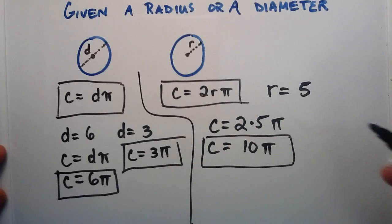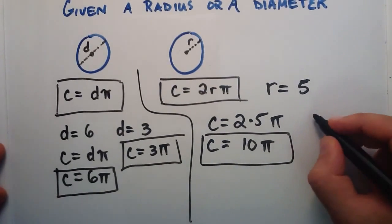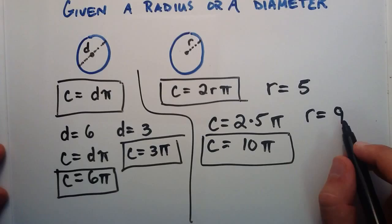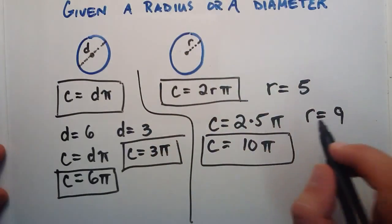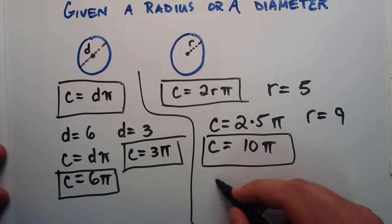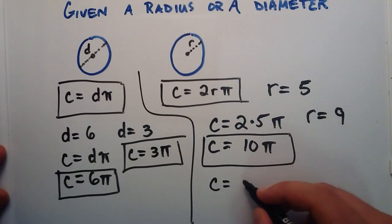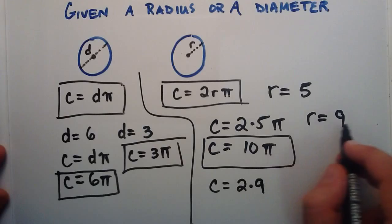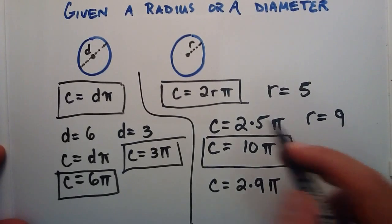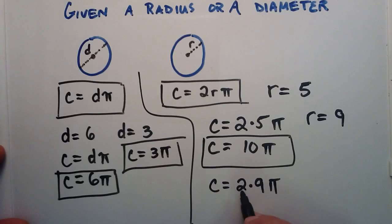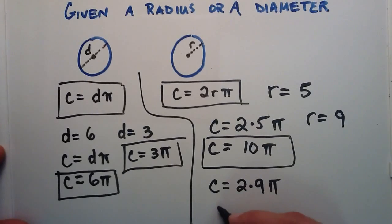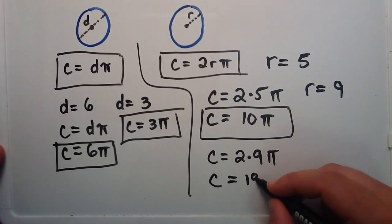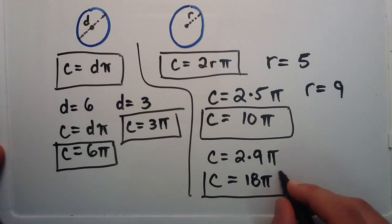And just to sink it in, I'll give one more example. Let's say that we're given a radius of 9. We want to find the circumference, the distance around the outside of the circle. Since we're given a radius, we plug it into the radius equation. The circumference is simply equal to 2, times 9 which is our radius, times pi. So c equals 2 times 9 times pi. 2 times 9 is 18, so if we have a circle with a radius of 9, then the circumference is 18 times pi.